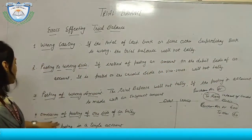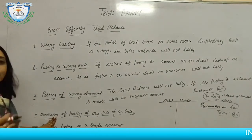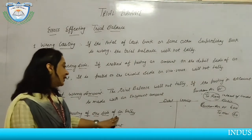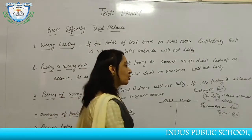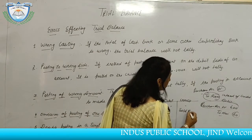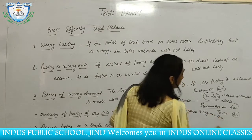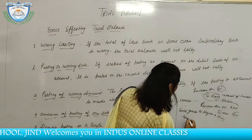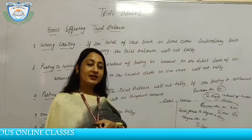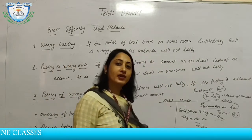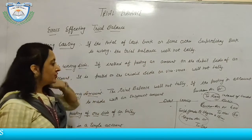The next error is omission of posting of one side of an entry — omission means to forget. For example, we have sold goods to Sham for rupees 1,000. The entry would be: Sham account debited to sales account. We correctly credited the sales account but forgot to post to Sham's account, so the trial balance total will not tally.